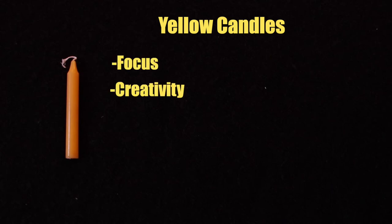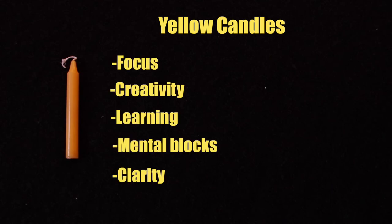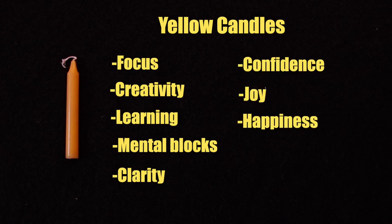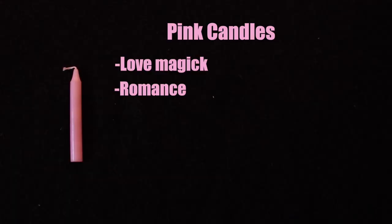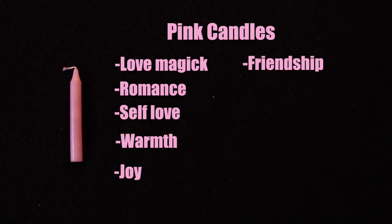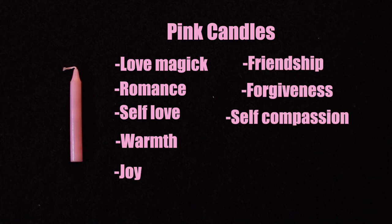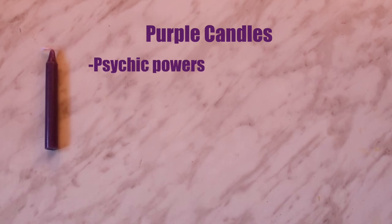Yellow is really good for focus, creativity, learning, mental blocks, clarity, confidence, joy, and happiness. I've also used a yellow candle for creative blocks. Pink candles are for love and romance — I use pink specifically for self-love spells. Pink candles can also be used for warmth, joy, friendship, forgiveness, self-compassion, and self-forgiveness. Not just forgiveness of someone else, but maybe you need to forgive yourself.